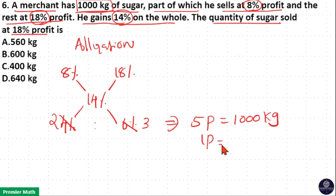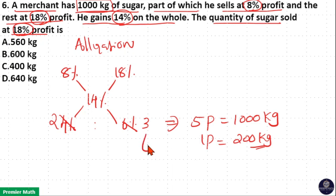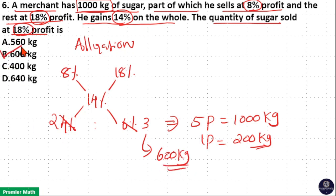1 part equals 200 kg. We need to find the quantity of sugar sold at 18% profit, which is 3 parts. That is 3 multiplied by 200, which equals 600 kg. So option B is your answer.